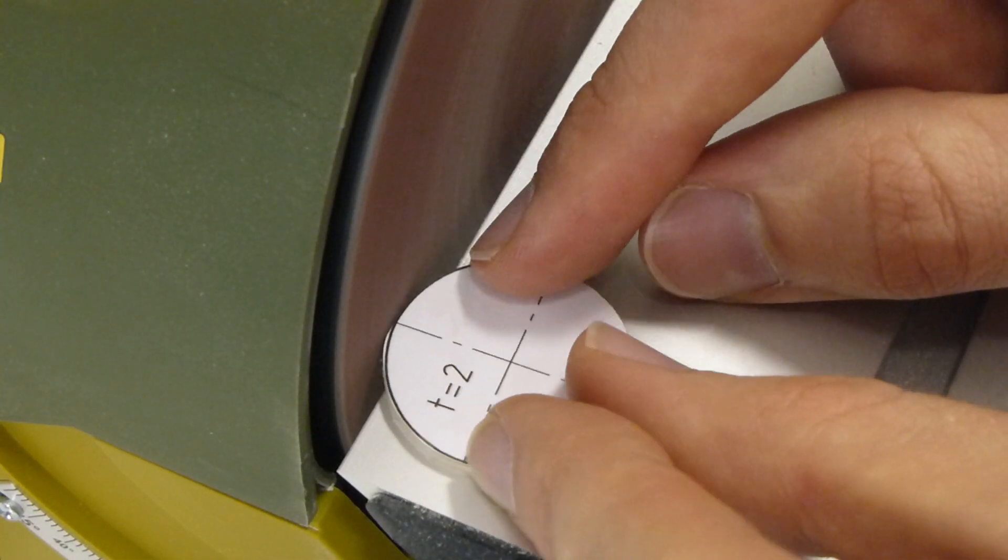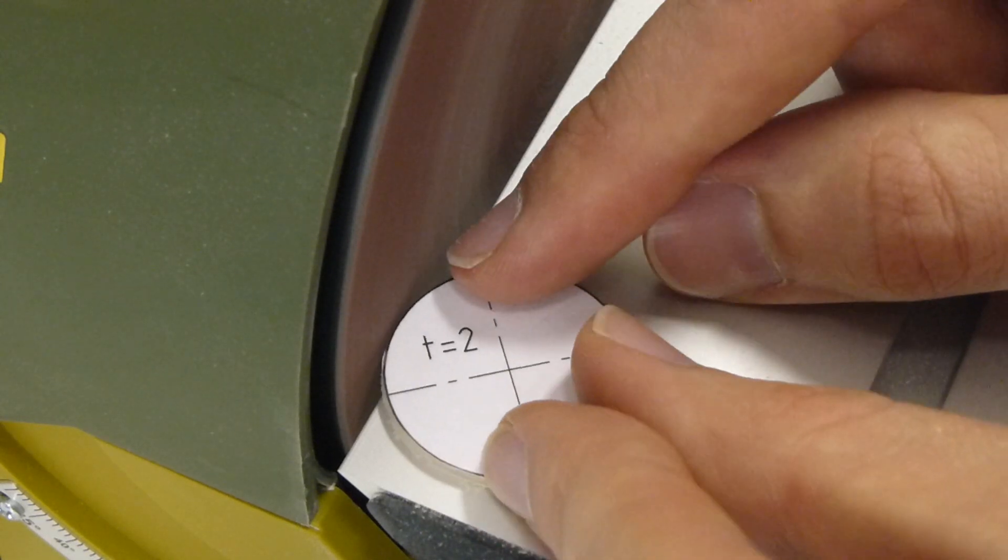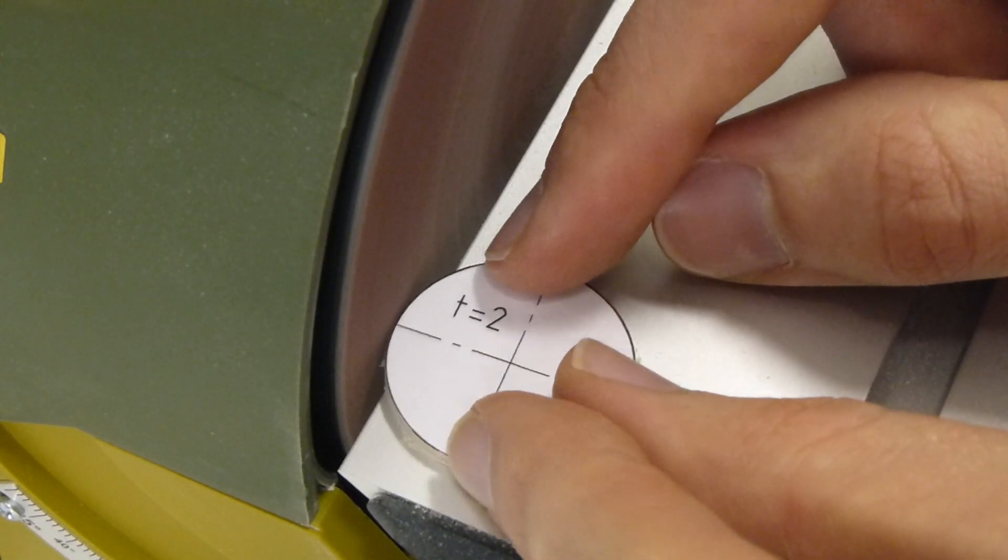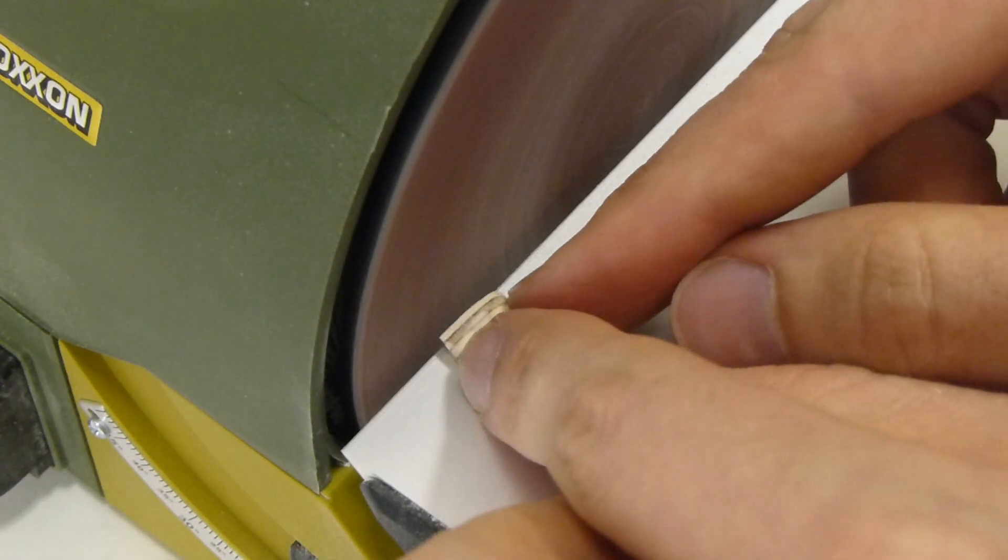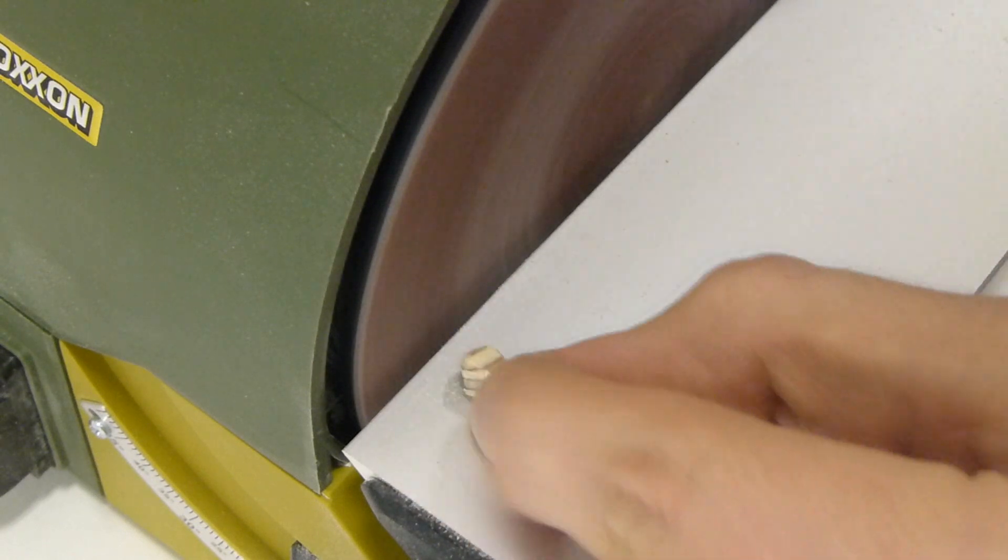Den Teller schön rund schleifen. Geht natürlich auch von Hand mit Schleifpapier. Die Maus muss auch noch in Form geschliffen werden. Auf die Finger achten, da die Maus sehr klein ist.